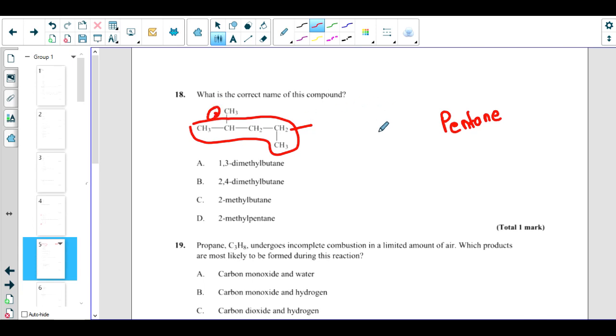So what will be the correct answer? 2-methylpentane. So the correct answer is D. Don't make this mistake - this is not butane only. This is not the parent chain. It starts from here and ends here. So the correct answer in this case is 2-methylpentane.